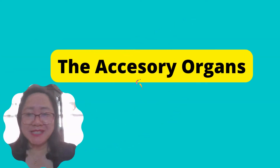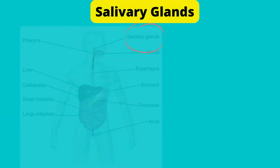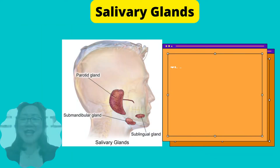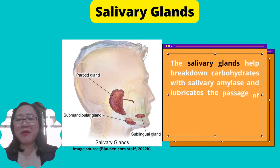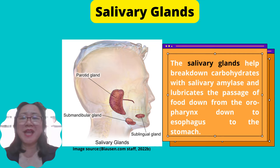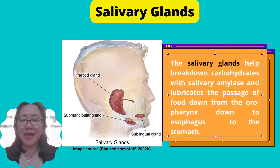Let us now study the accessory organs of digestion. One accessory organ is the salivary glands. The salivary glands help break down carbohydrates with salivary amylase and lubricate the passage of food from the oropharynx down to the esophagus to the stomach. There are three types: the parotid gland, submandibular gland, and the sublingual gland.